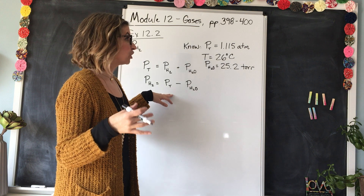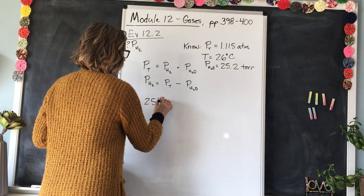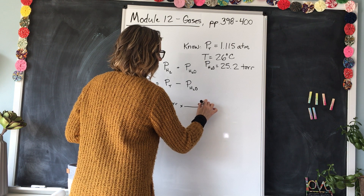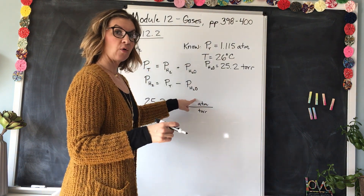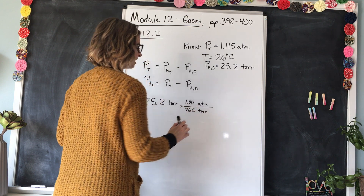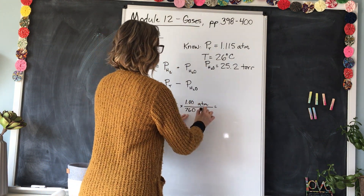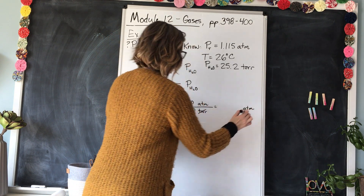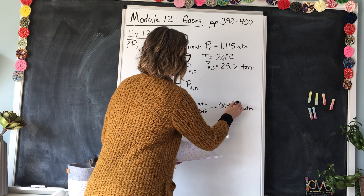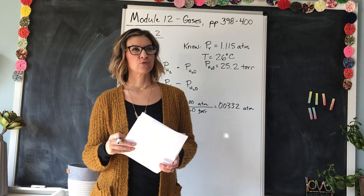In order to subtract that from the total pressure, our units need to match — we have atmospheres and torr. Let's convert 25.2 torr into atmospheres using the factor label method. We put torr on the bottom to cancel and atmospheres on top. The ratio is 1.00 atmosphere = 760 torr, so we calculate 25.2 divided by 760. The torr units cancel, giving us 0.0332 atmospheres — that's the partial pressure of the water vapor present.